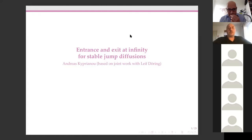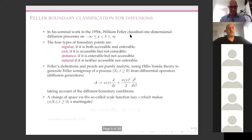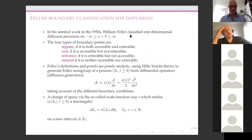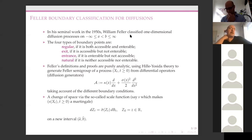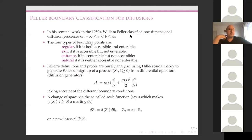I want to start by reminding you a little bit of history. Back in the 1950s, William Feller classified boundaries for one-dimensional diffusions that live on the interval (A, B). A can be minus infinity and B can be plus infinity. The four main categories are: regular, if it's both accessible and enterable; exit, if it's accessible but not enterable; entrance, if you can come in but can't get to that boundary; and natural, if neither.